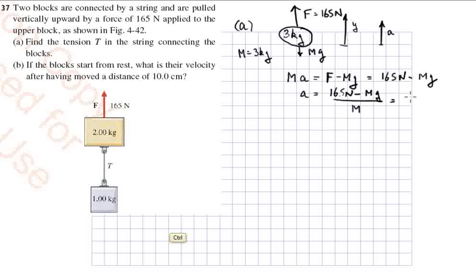Okay, so that means 165 Newtons minus 3 kilograms times 9.8 meters per second per second, divided by 3 kilograms. That comes out to be 45.2 meters per second per second.